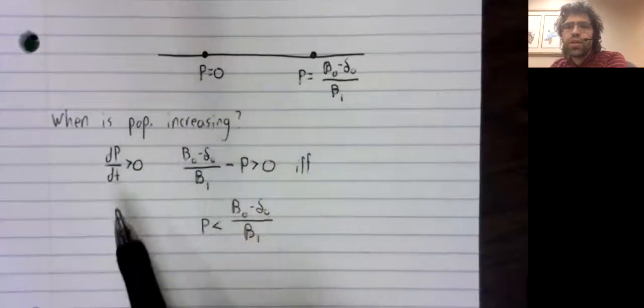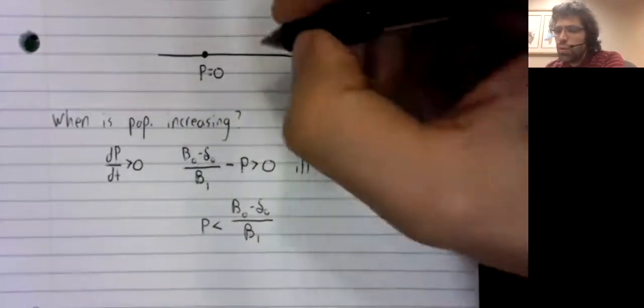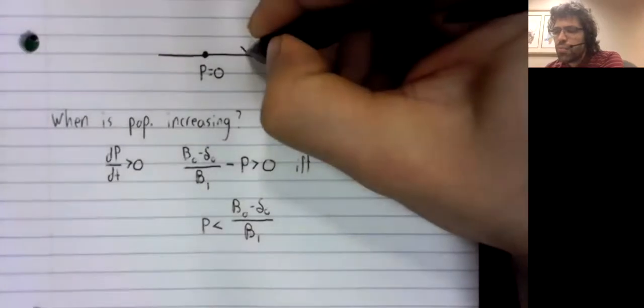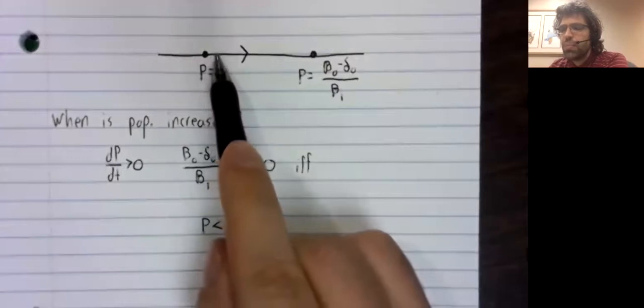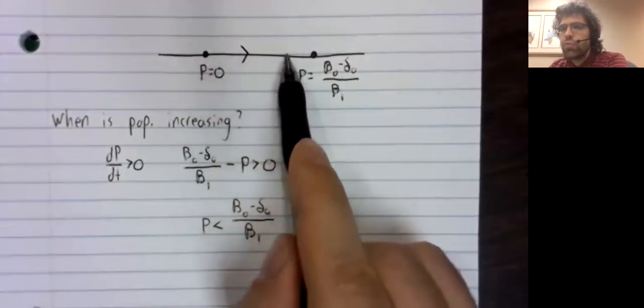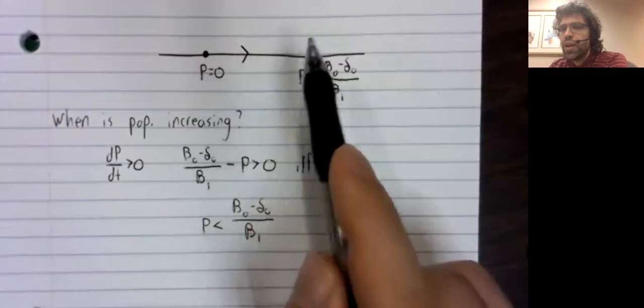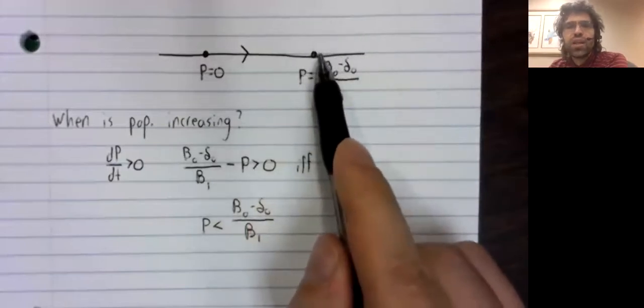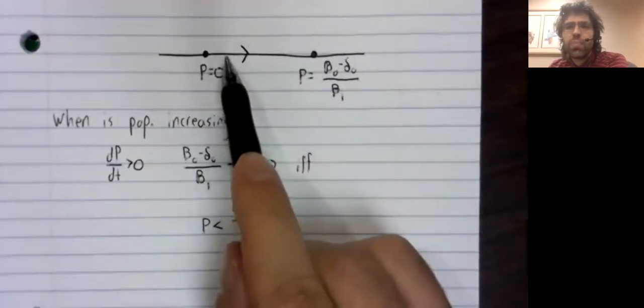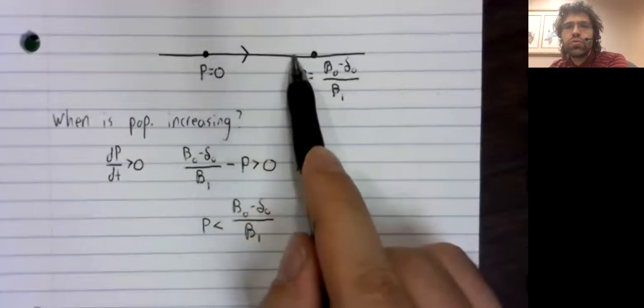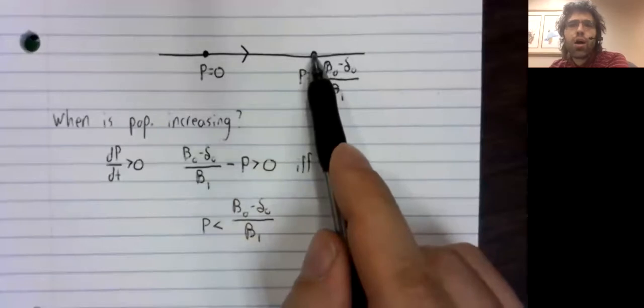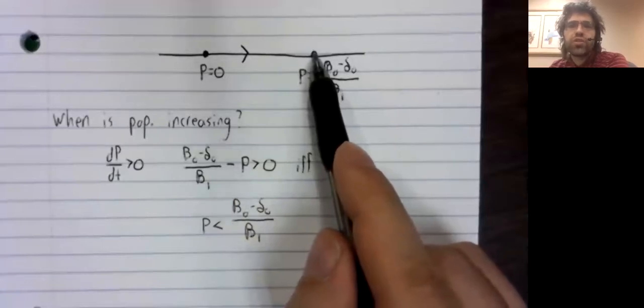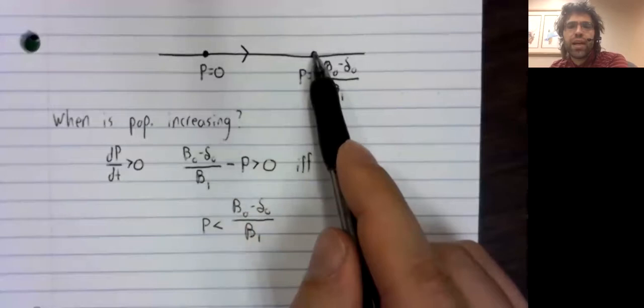So what if the population falls within this interval? Then the derivative is positive and the population increases. The population grows. And at this point the population is not changing. So the population gets closer and closer to this point. And if it reaches it, it stops growing. It just sits here forever now.